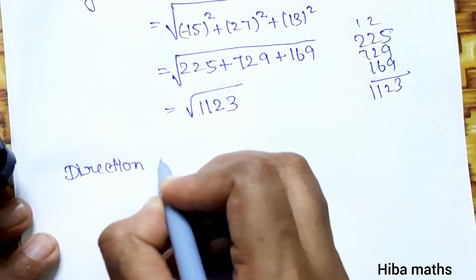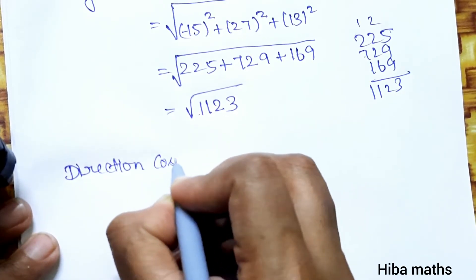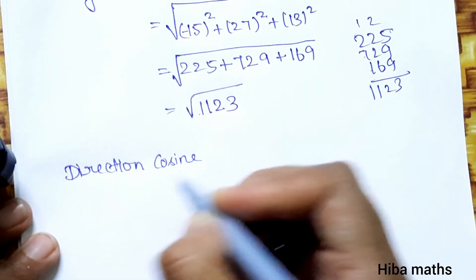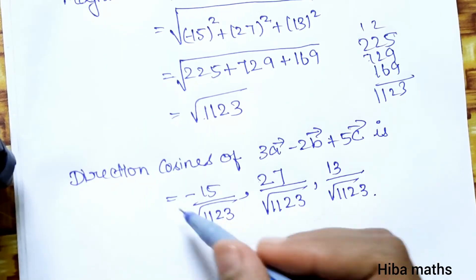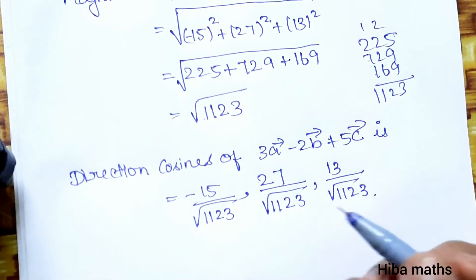Direction cosines of 3a − 2b + 5c are found by dividing each component by √1123: (−15/√1123, 27/√1123, 13/√1123).